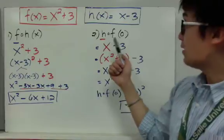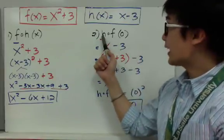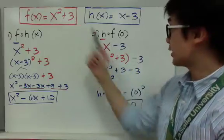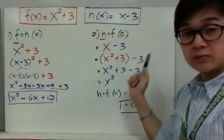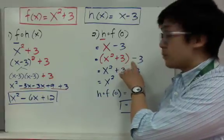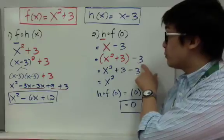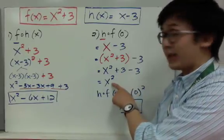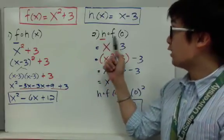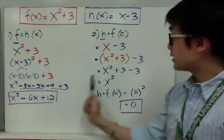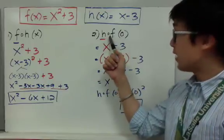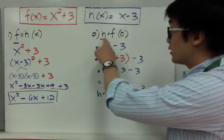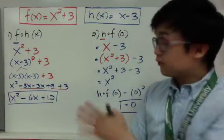The next problem is h of f of 0. Since h is the first letter, I use x minus 3 and replace x with f of x, which is x squared plus 3. So I get (x squared plus 3) minus 3. Getting rid of the parentheses gives x squared plus 3 minus 3, and 3 minus 3 is 0, leaving x squared. However, the question asks for h of f of 0, not h of f of x, so I substitute 0: 0 squared equals 0. Therefore h of f of 0 equals 0.